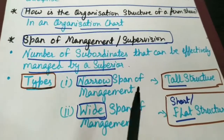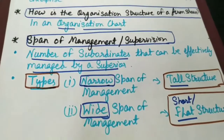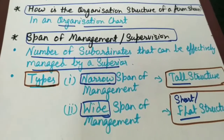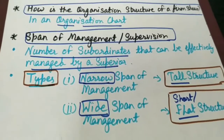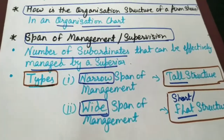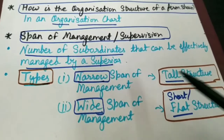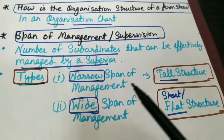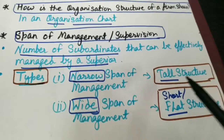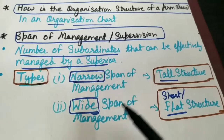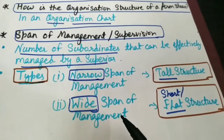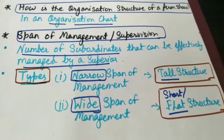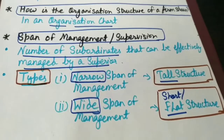Basically, span of management determines the levels of management in the organization. Ye ek shape provide kerta hai hamare organization structure ko. There are two types of span of management. First is narrow span of management, jo ek organization ko tall structure provide kerta hai. And next is wide span of management, jo ek organization ko short or flat structure provide kar sakta hai.